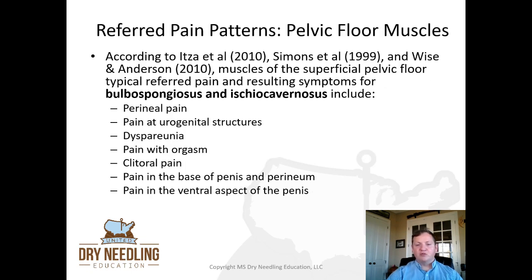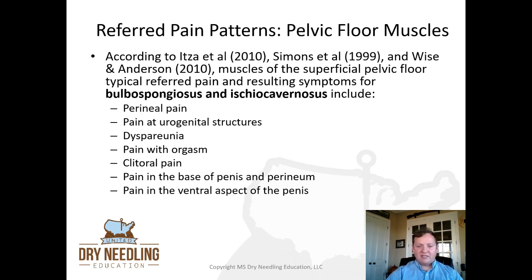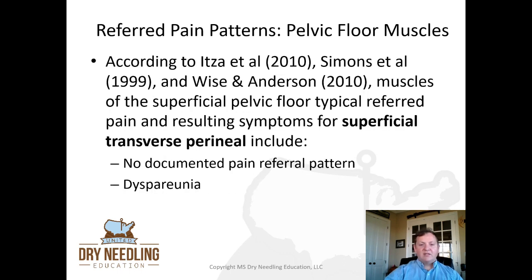Getting more into the true pelvic floor muscles — the superficial layer muscles for bulbospongiosus and ischiocavernosus include perineal pain, pain at the urogenital structures, painful intercourse, pain with orgasm, clitoral pain, pain in the base of the penis and the perineum, and pain in the ventral aspect of the penis in individuals with male anatomy. For the superficial transverse perineal muscle, there is actually no documented pain referral pattern with the exception of painful intercourse.